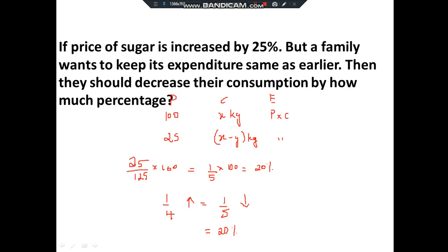Same concept, different variety: if the price of sugar is increased by 25%, but a family wants to keep its expenditure the same as earlier, they should decrease their consumption by how much percentage? Since the price increases, expenditure would rise, but to retain the same expenditure the only option is to reduce the quantity bought — so how much percentage must consumption be reduced?